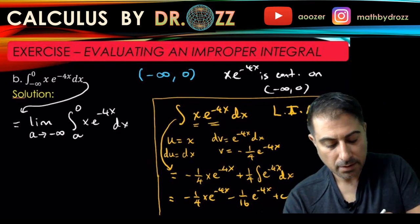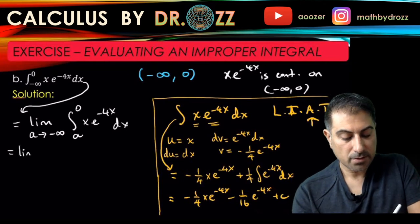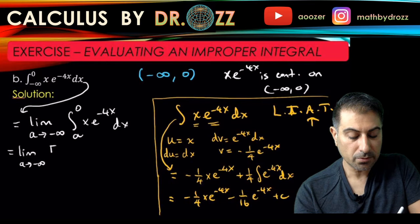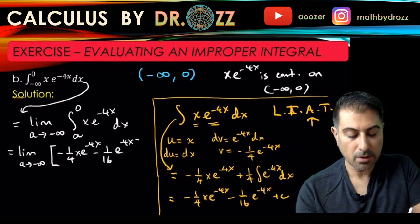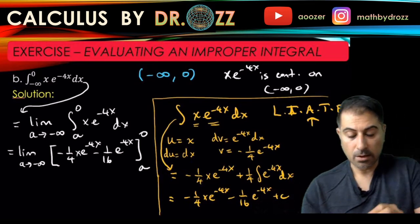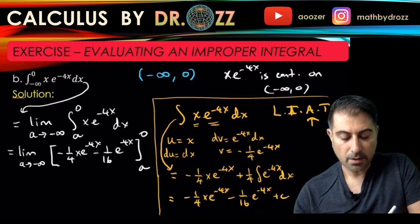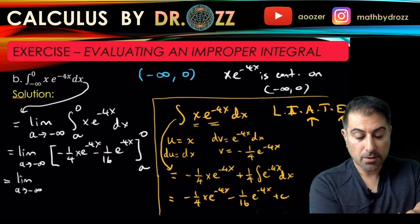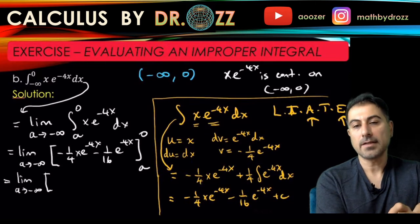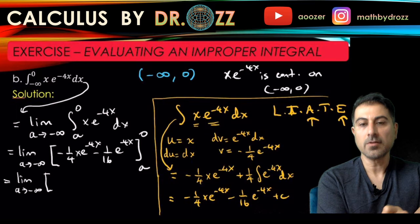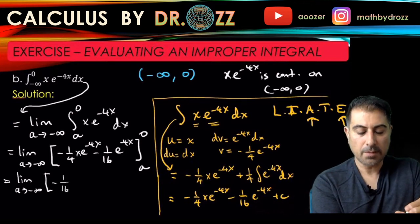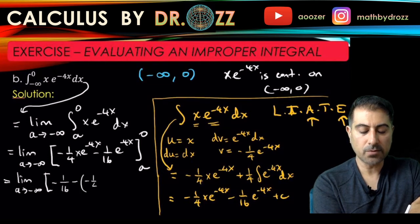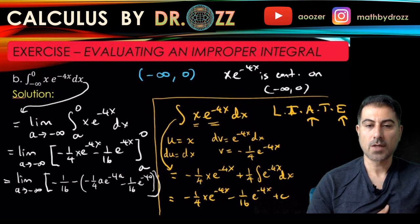Now we have a definite integral, so we apply the First Fundamental Theorem of Calculus using this antiderivative with the upper limit 0 and lower limit a. Plugging in x = 0: the first term is 0 (because of the x factor), and e^0 = 1, giving −(1/16). Then subtracting the expression evaluated at x = a: −(1/4)·a·e^(−4a) − (1/16)·e^(−4a).